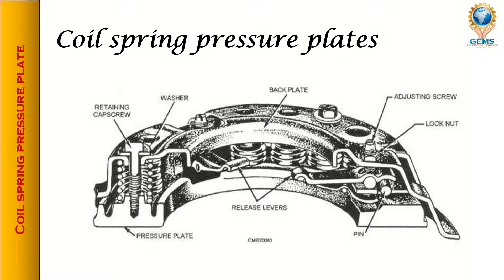This is a figure of the coil spring pressure plate. If you see here, the components are: pressure plate, retaining cap screw, washer, back plate, adjusting screw, and lock nut. The adjusting screw and lock nut are used to give more or less pressure — you adjust the screw and then lock it using the lock nut. The pressure plate is the main component, which gives the pressure when you push or release the clutch pedal.